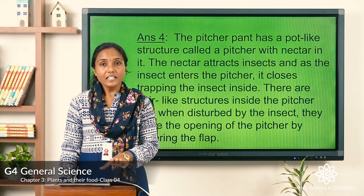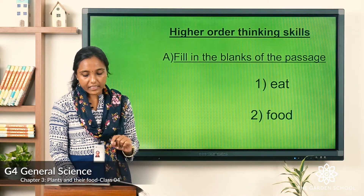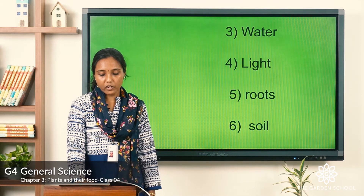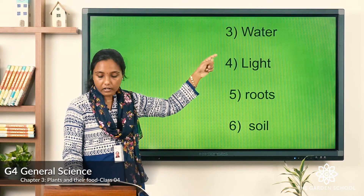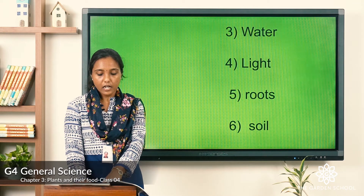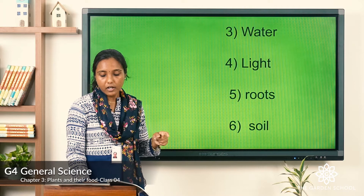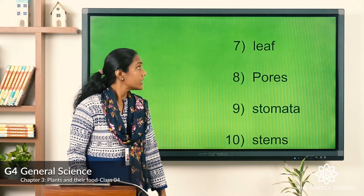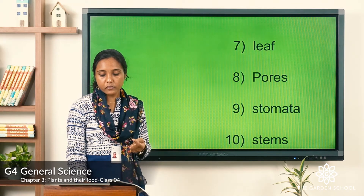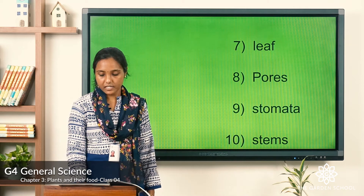Let's discuss the answers. Plants do not eat food like animals — they make their own food. The food is made in the leaves using carbon dioxide, water, and light from the sun. The roots absorb water from the soil. Air enters the leaf through tiny pores called stomata. The excess food is stored in different parts of the plant, and in the sugarcane plant it is stored in the stems.